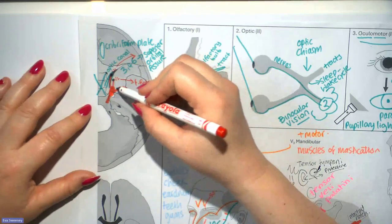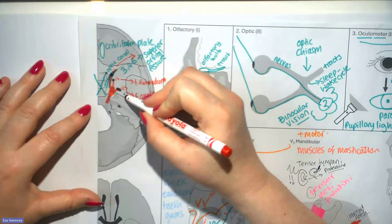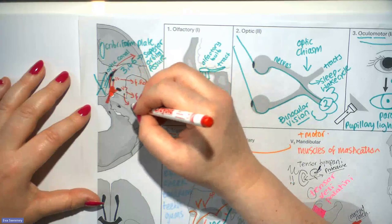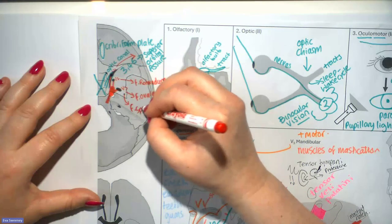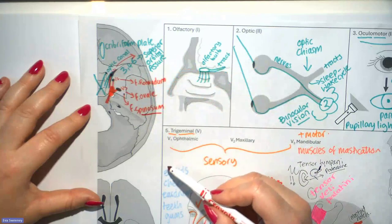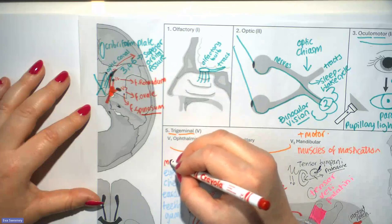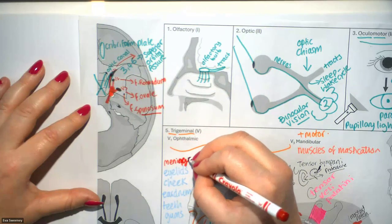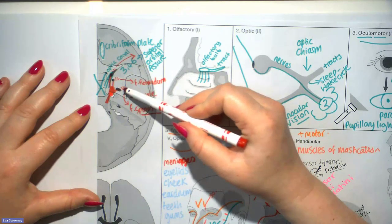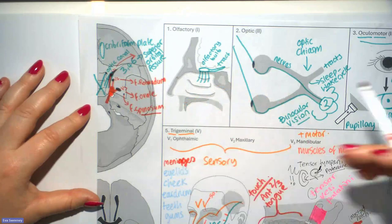There's a small part of V3 that comes back into the cranium, passing up through a little tiny opening called foramen spinosum. This is the meningeal branch of V3, which re-enters the skull to supply the dura mater, one of the meningeal layers.